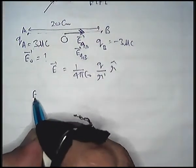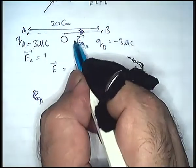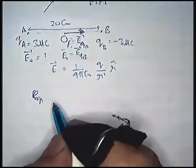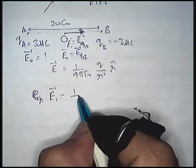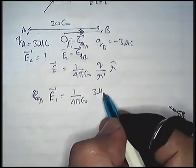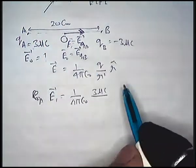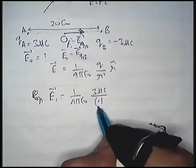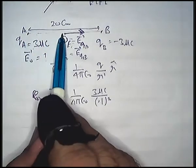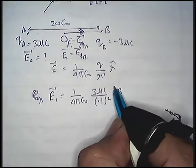The electric field due to QA is called E1, and the electric field due to QB is called E2. E1 vector equals 1 by 4 pi epsilon naught times 3 µC divided by 0.1 meter squared, and it is directed along AB.